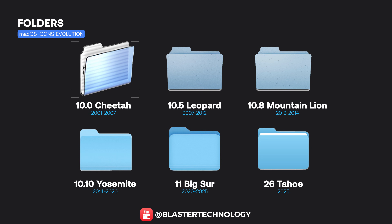The Folders icon moved from a realistic, layered design to a simplified, flat shape. With Big Sur, it gained subtle volume and cleaner colors, resulting in a much more fluid look today.